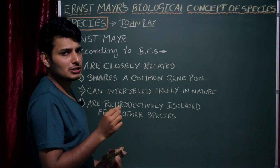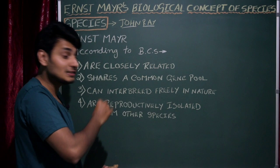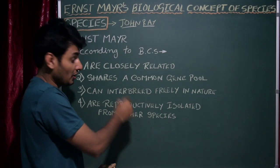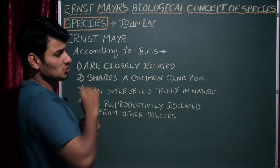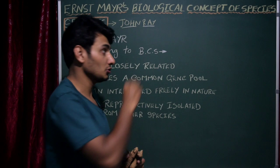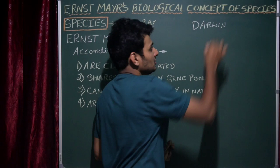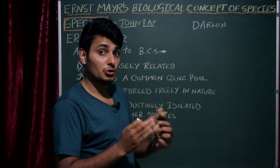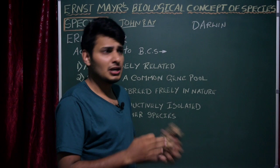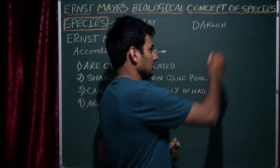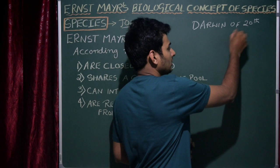There are four important theories in the biological concept of species — the fourth one is the main basis. According to Ernst Mayer, who is also called the 'Darwin of the 20th century,' he was a leading evolutionary biologist, ornithologist, and a German biologist. Just as Darwin is the father of evolution, Mayer is compared to him in the field of evolutionary biology.